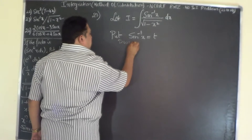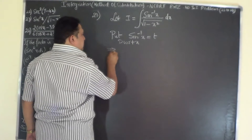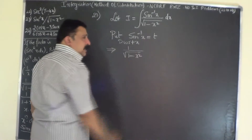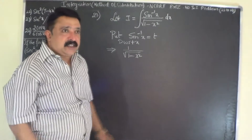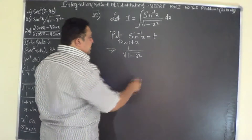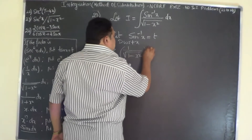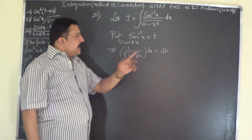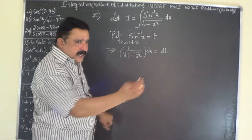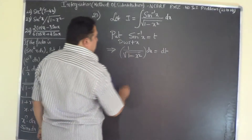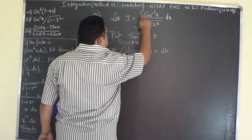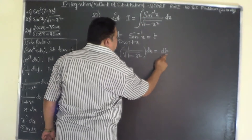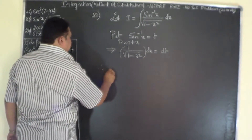Differentiating with respect to x: the differential coefficient of sin⁻¹(x) is 1/√(1 - x²), so 1/√(1 - x²) × dx = dt. Therefore in this problem, 1/√(1 - x²) dx can be replaced by dt.